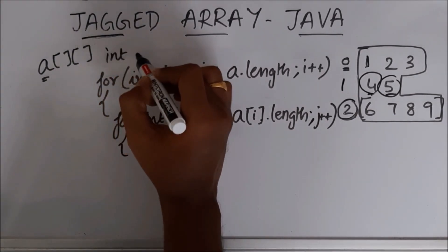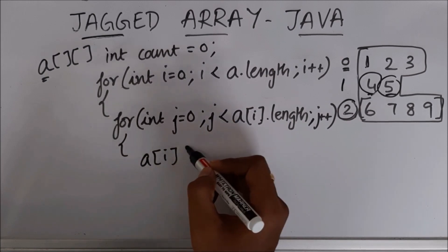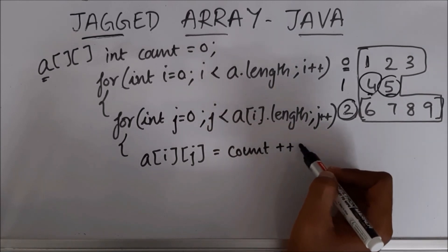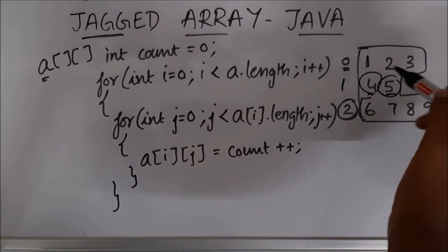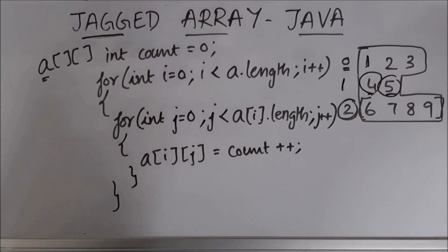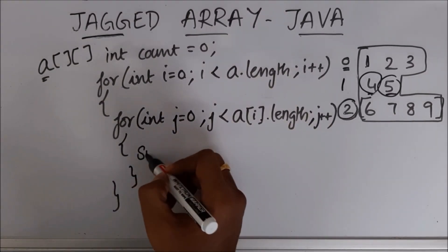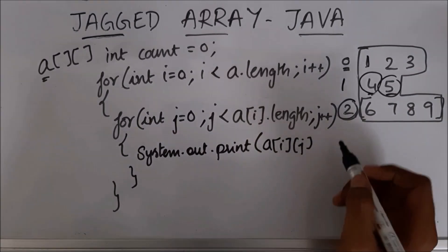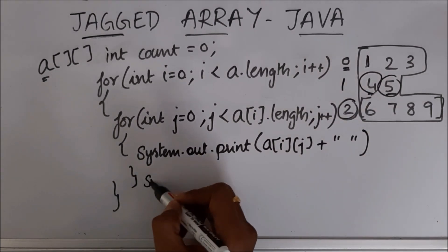Instead of taking input from the user, I am going to use a count variable: int count = 0, and assign a[i][j] = count, then increment it. After closing the for loops, this generates the jagged array with the specified values. For printing, I reuse the same loop structure and replace the assignment with System.out.print(a[i][j]) with a space, and after the inner loop, print a new line.